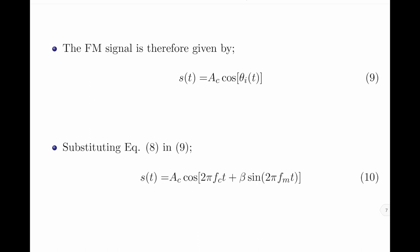Lastly, the frequency modulated signal is given by the generic expression s(t) equals ac into cos(θi(t)). Substituting for θi(t) from the previous equation, we obtain the expression for the single tone frequency modulated signal as s(t) equals ac into cos(2π·fc·t plus beta into sin(2π·fm·t)). This expression is the time domain representation of the single tone frequency modulated signal.